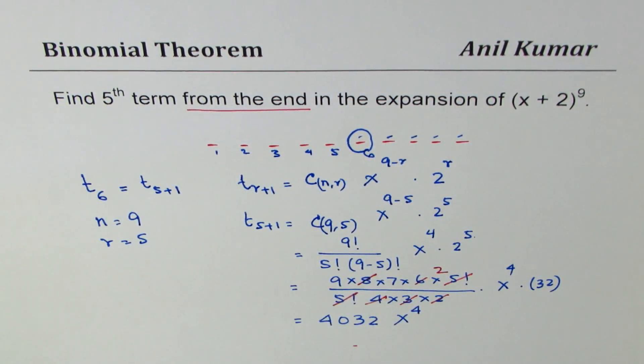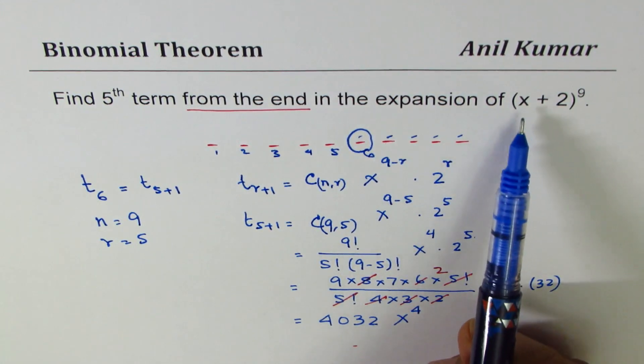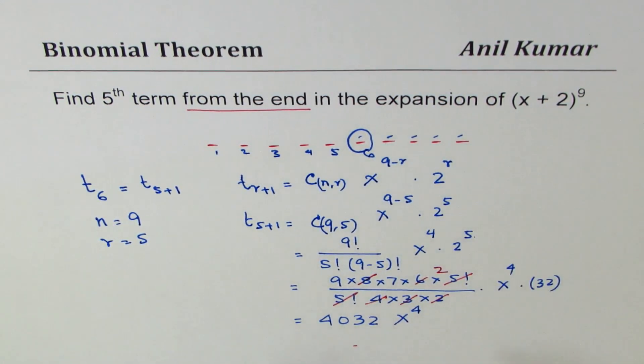So the 5th term from the end of the expansion of (x + 2) to the power of 9 is going to be 4032 x to the power of 4. I hope the method is clear.